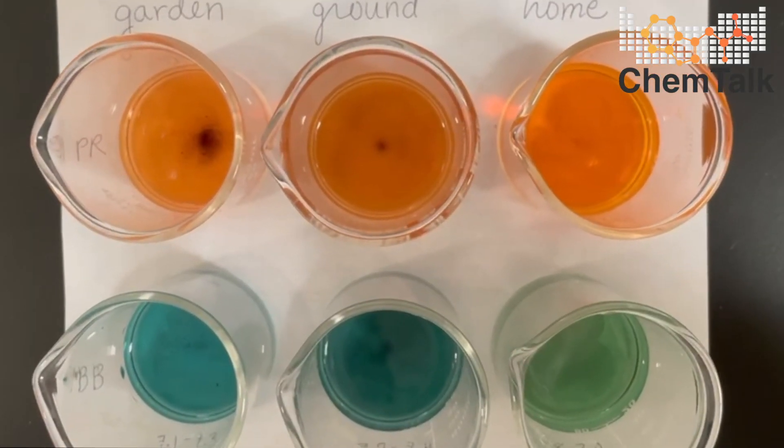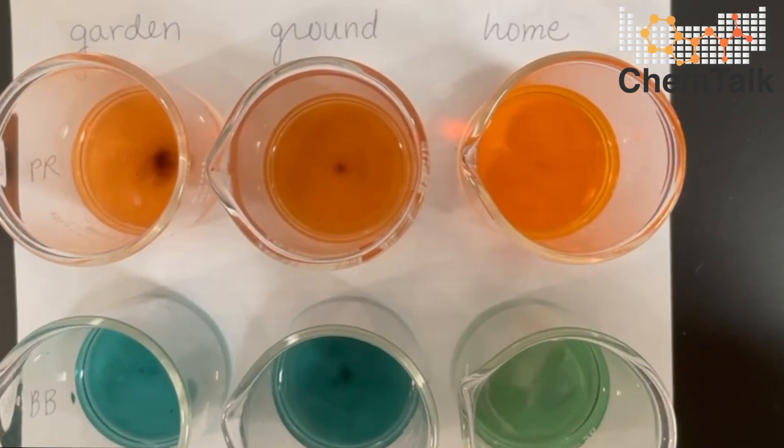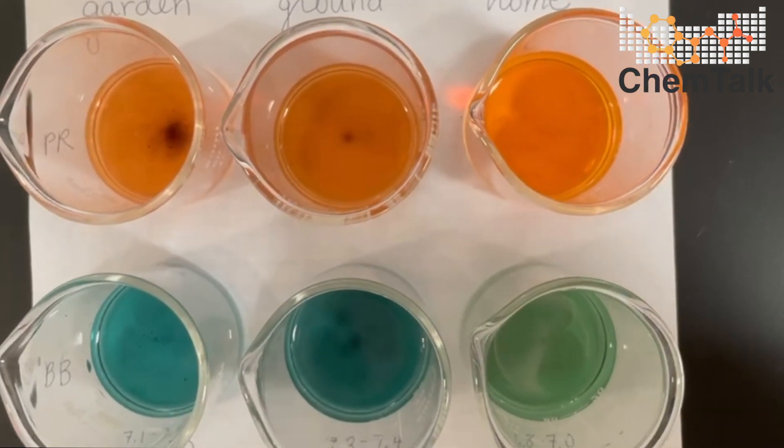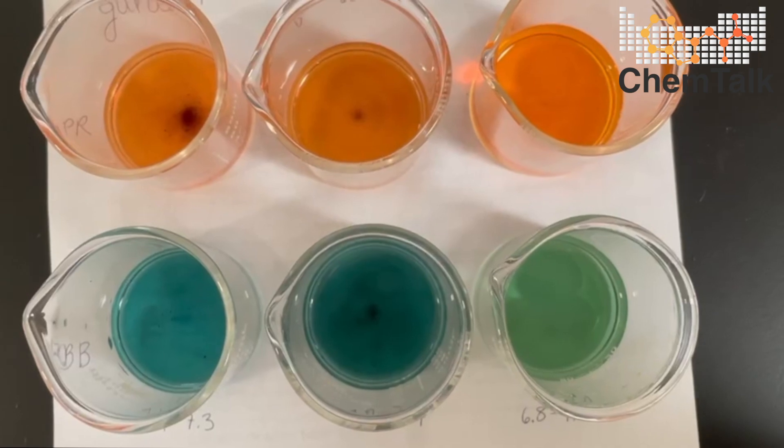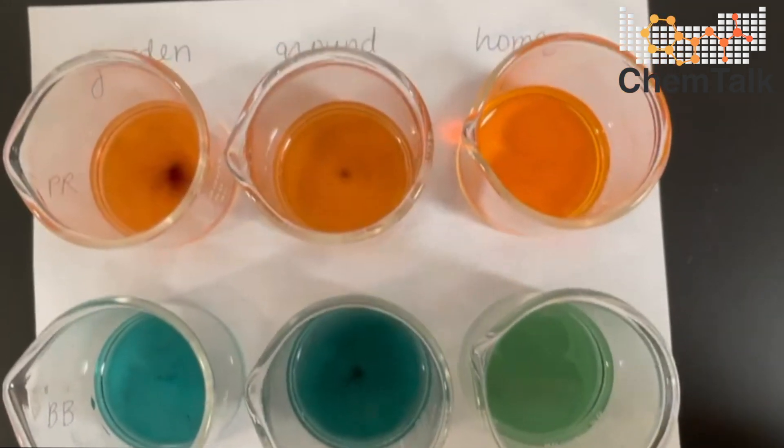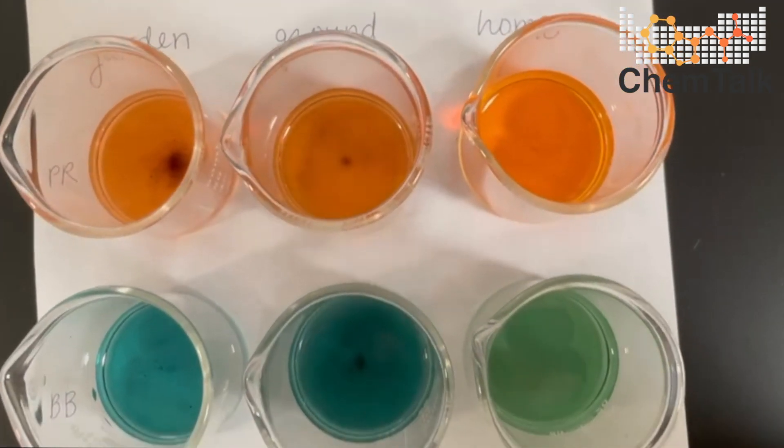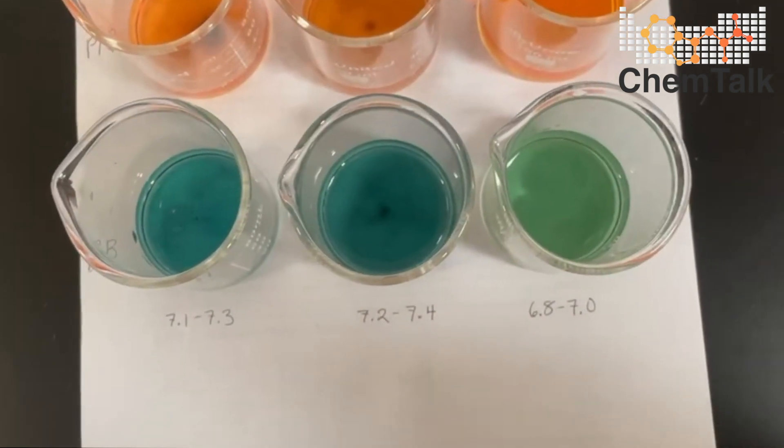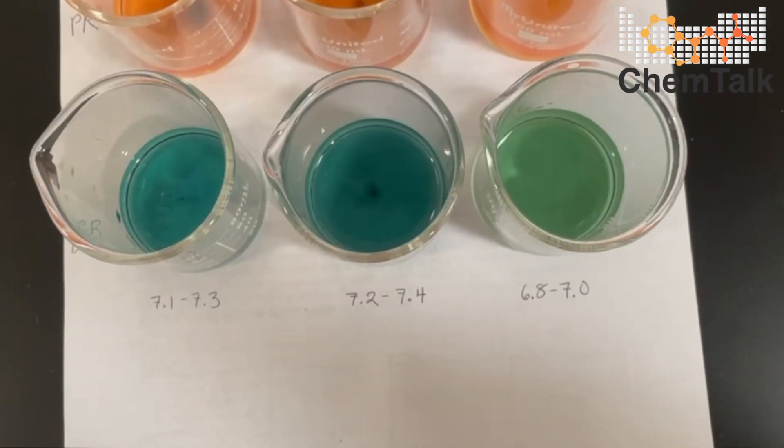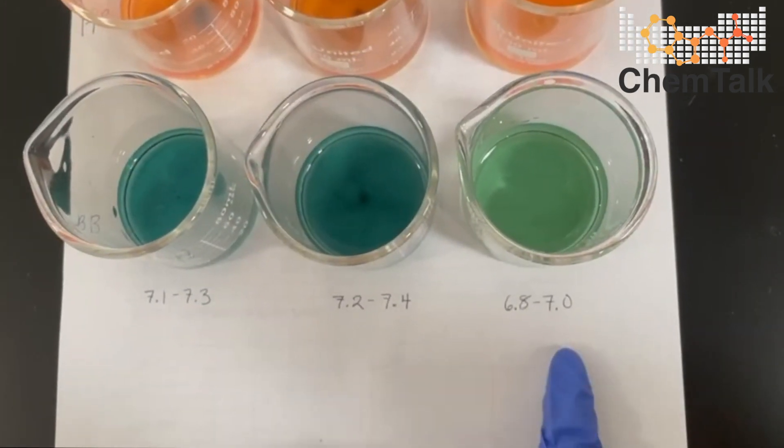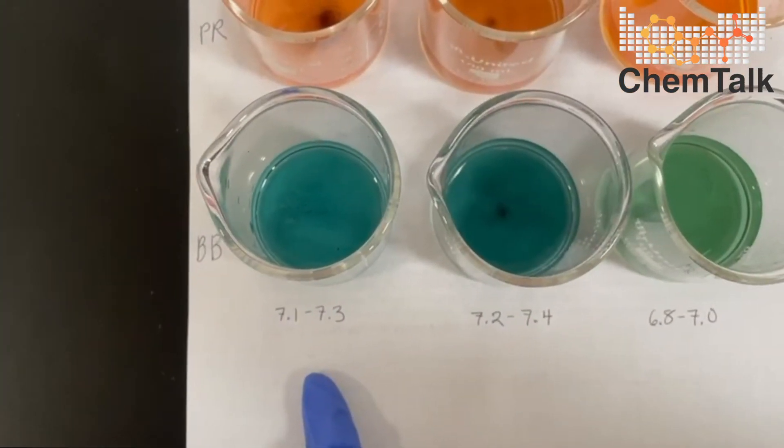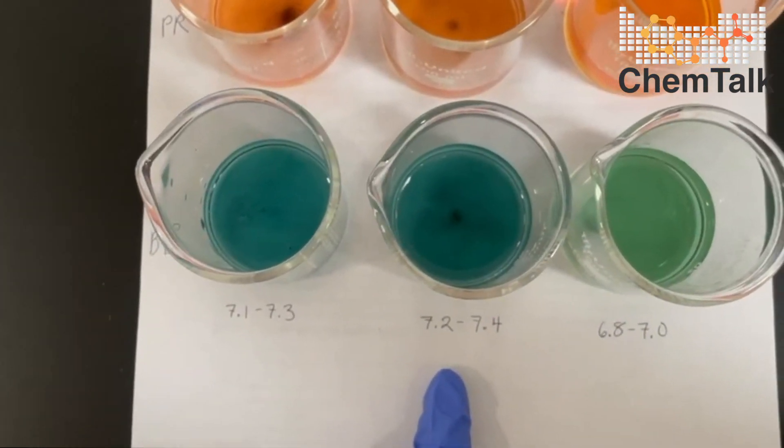So here are the final results. You can see that the phenol red indicator was a little bit less effective because the colors are not very distinct. So the pHs of each of these soils likely fell outside of the sensitivity range for phenol red. However, that's why we use two indicators. The bromothymol blue does show more distinction. And it actually showed us that the soil from my home was slightly acidic. And the soil here from both the garden and the ground was slightly basic.